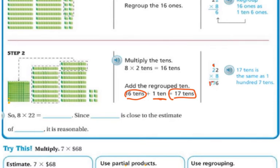So my answer is going to be, so there's my 17 tens plus my 6 ones that I had from before. So 8 times 22 is 176. And since 176 is close to the estimate that we had of 160, it's reasonable.